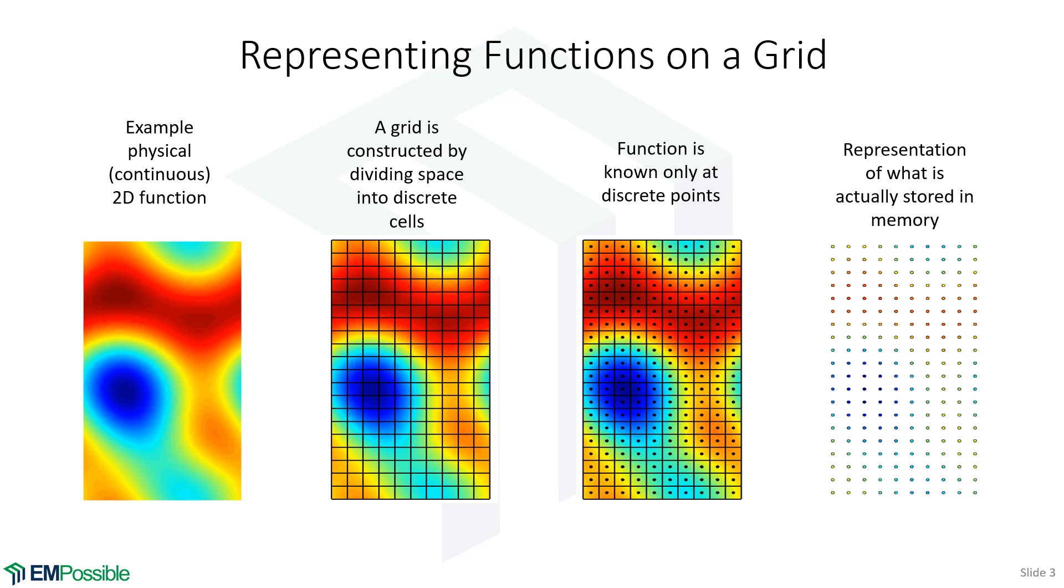What we do is we only store the value of that function at one infinitely small point inside of each cell. Perhaps a better picture of what is actually stored would look like this, where we just have discrete values of the functions only at discrete points. We have no idea what's going on between any of those points. We can do things like interpolations and make pretty good guesses, but we just don't know what the function is between those points.